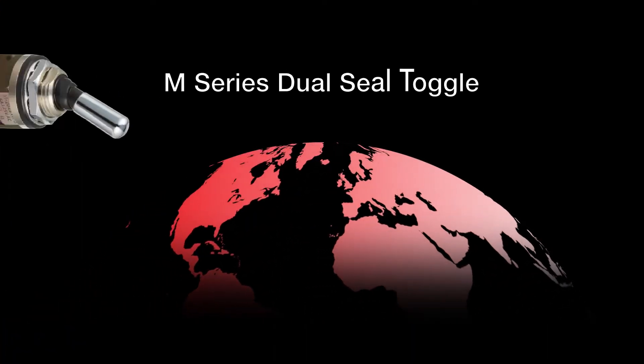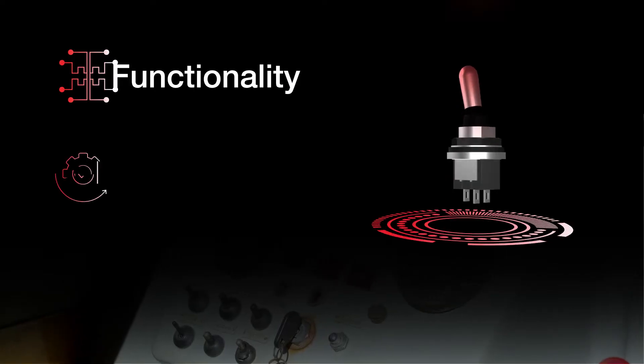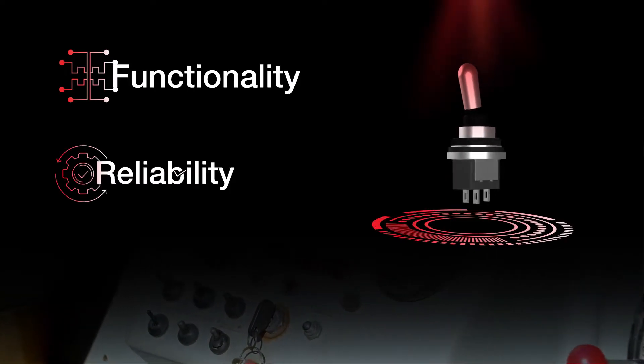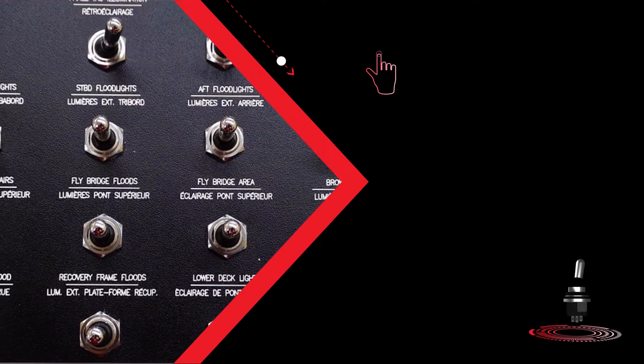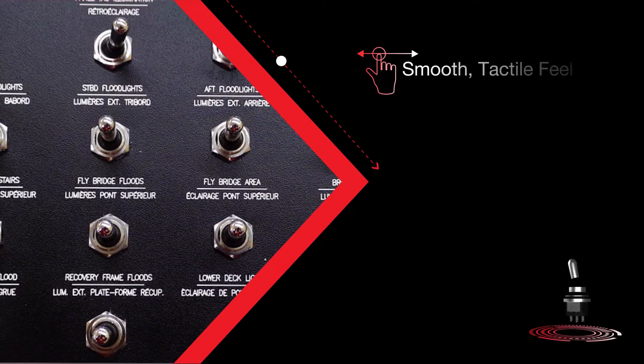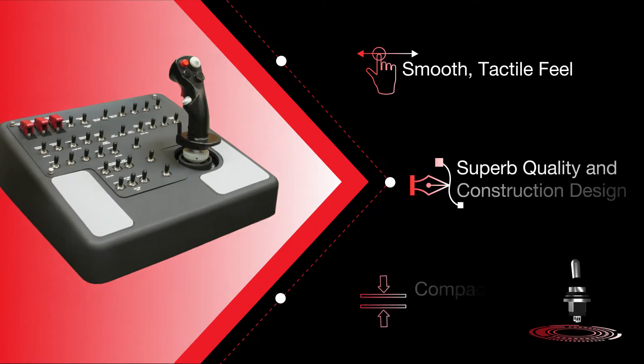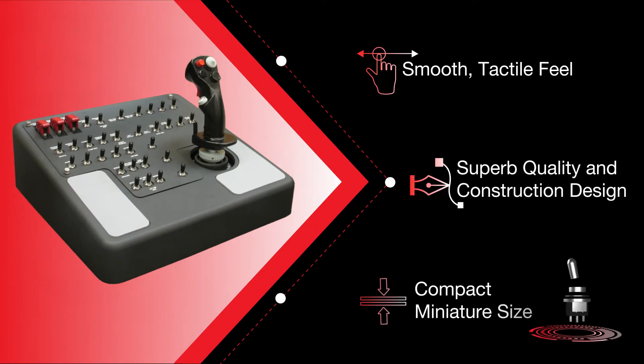The M-Series Dual Seal Toggle combines functionality and reliability in a single essential panel seal switch. Its polished chrome-plated actuator provides a smooth tactile feel while the superb quality and construction design prohibit entry of harmful particles that might otherwise compromise lever operation.